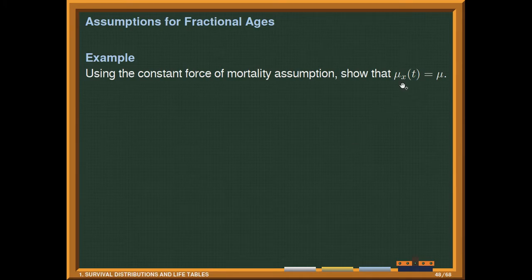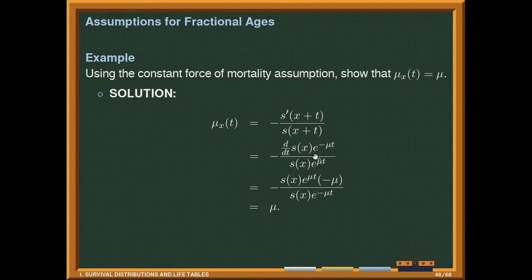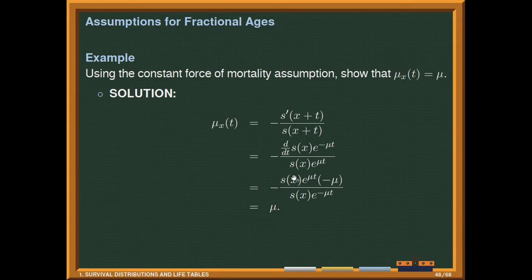Under the constant force of mortality assumption, μ_{x+t} = μ, where μ = −log(p_x). Recalling that the force of mortality is defined as −(d/dt)s(x + t) / s(x + t), we plug in s(x + t) = s(x)·e^(μt) and differentiate the numerator with respect to t. This gives s(x)·e^(μt)·(−μ) in the numerator and s(x)·e^(μt) in the denominator, which cancel, yielding μ as a constant — confirming the constant force of mortality.